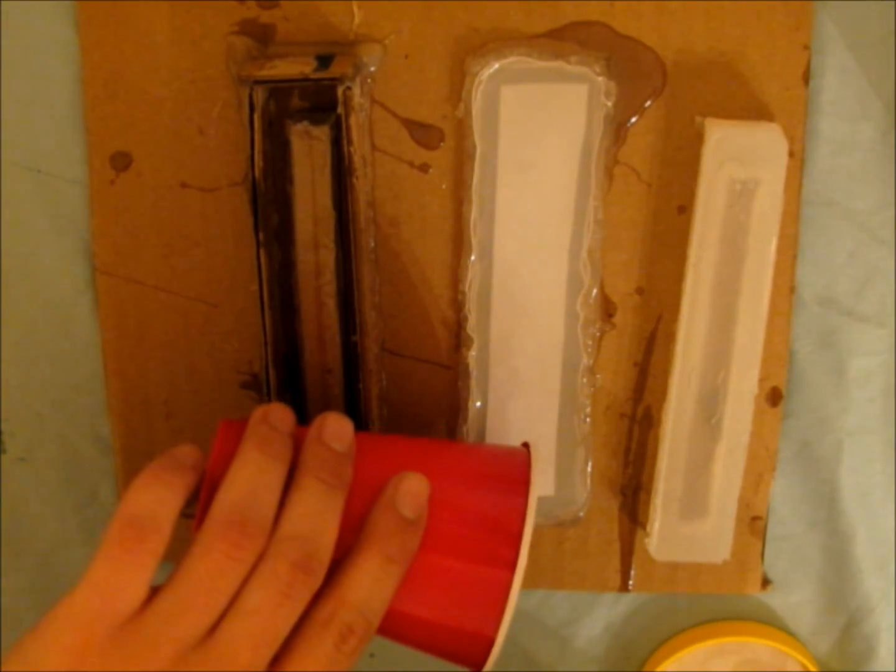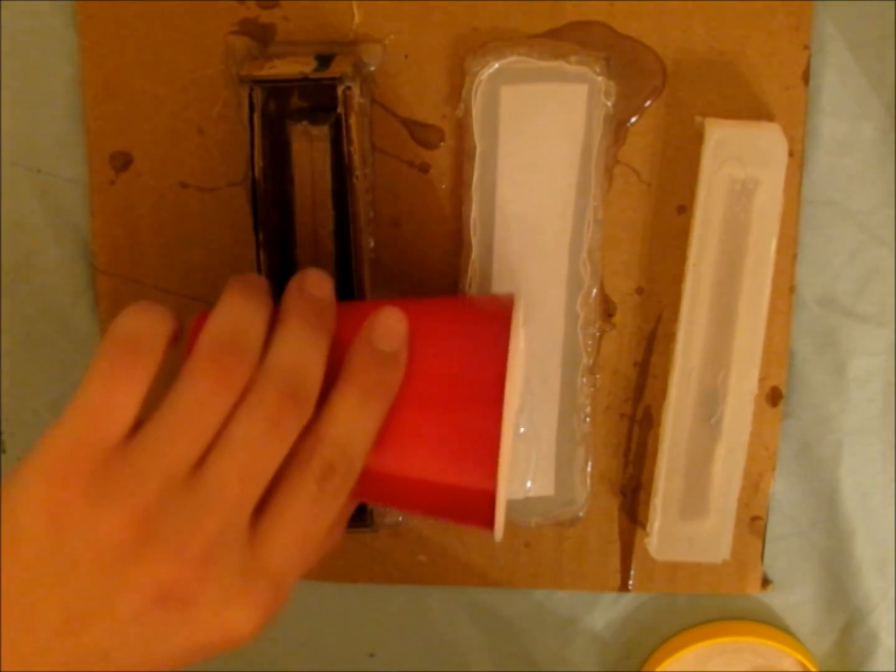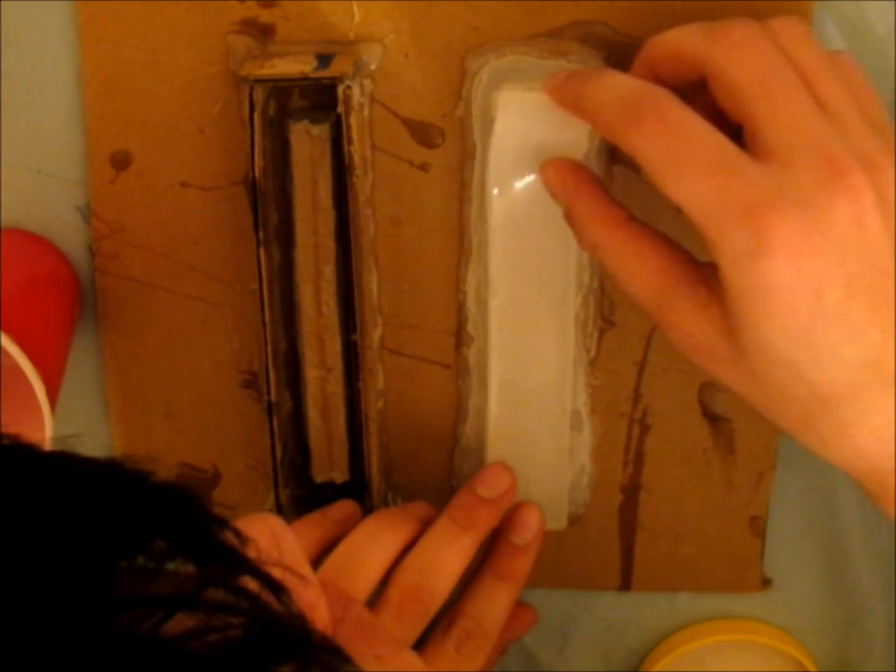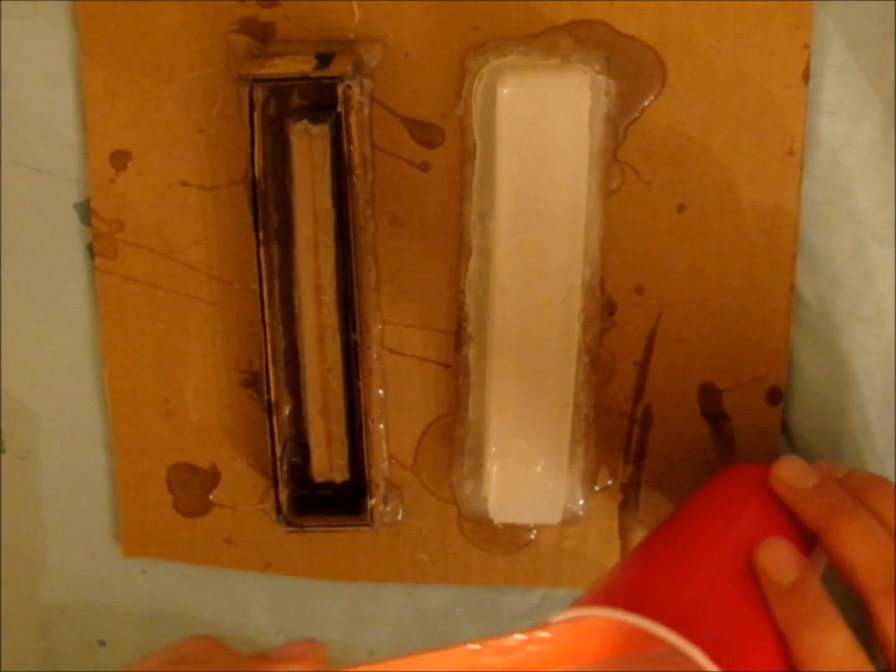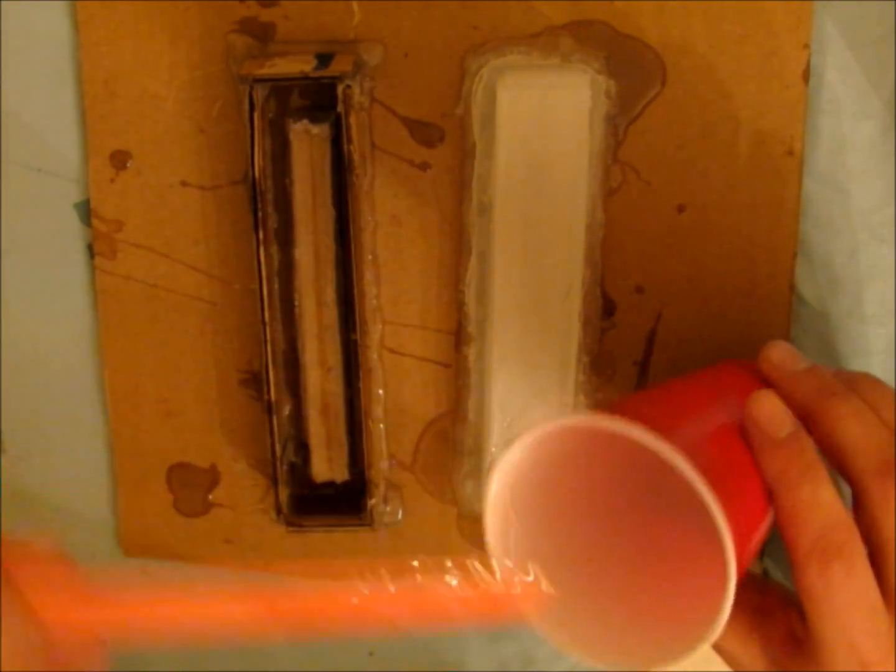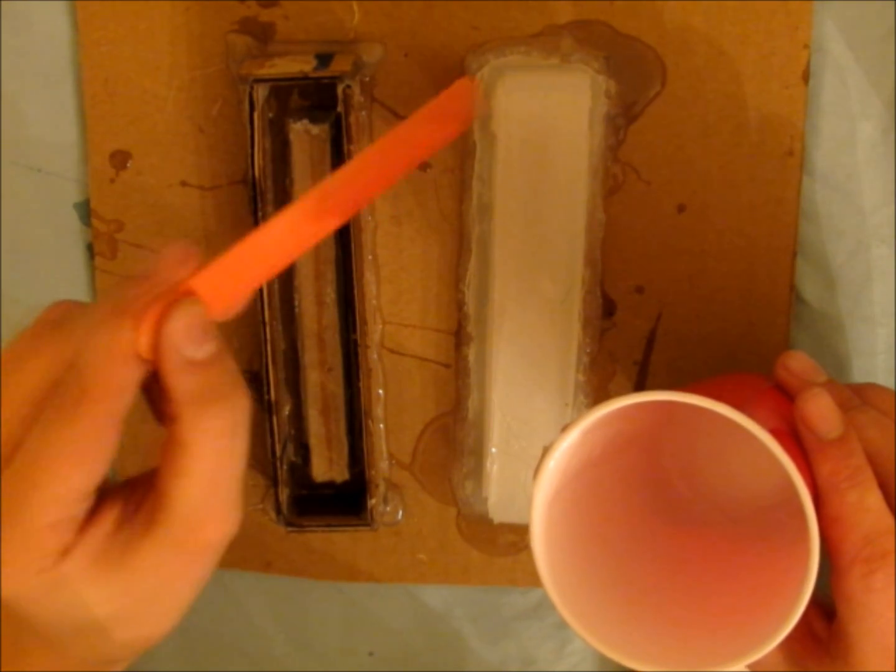Now it is time to put the two halves together. Pour some Ecoflex onto the piece with the paper and spread it evenly. Then put the other piece on top. Deposit excess rubber onto the outside of the robot where the pieces meet. Wait at least four hours for the Ecoflex to cure.